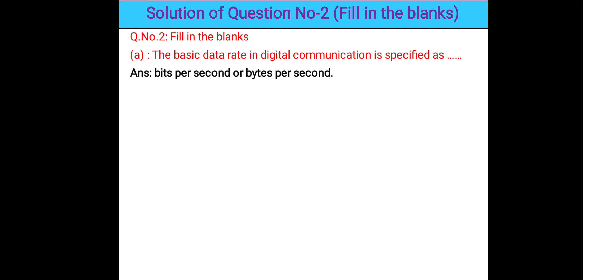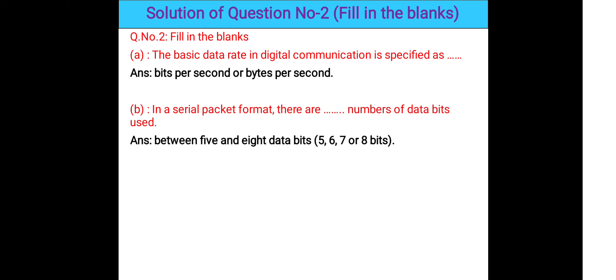Now the solutions for question number two — Fill in the Blanks. Question 2a: The basic data rate in digital communication is specified as blank — the answer is bits per second or bytes per second. Question 2b: In a serial packet format, there are blank number of data bits used — the answer is 5 to 8 data bits; any number from 5, 6, 7, or 8 can be used.